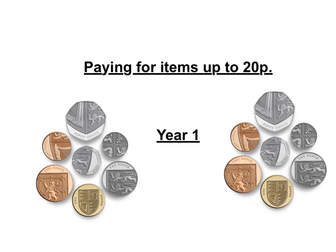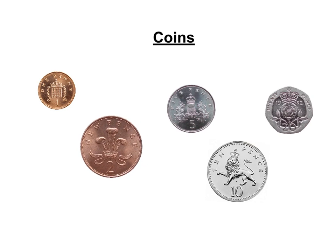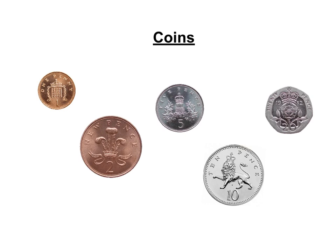In Year 1, we teach the children to pay for items that cost up to 20 pence using different combinations of coins. When we teach the concept of money, we remind the children what coins we have: 1 pence, 2 pence, 5 pence, 10 pence, and 20 pence.